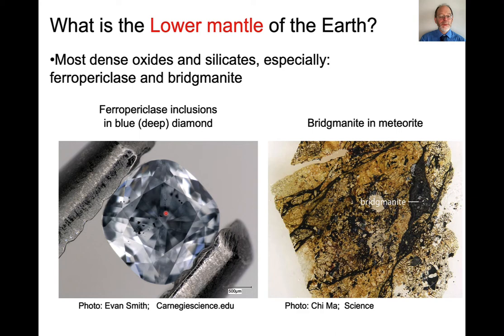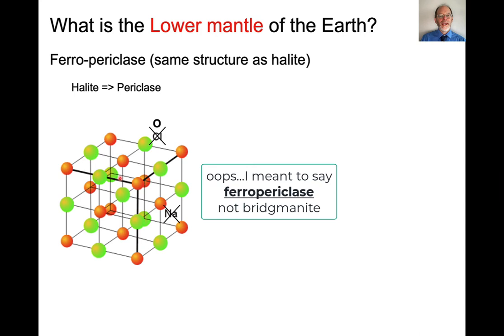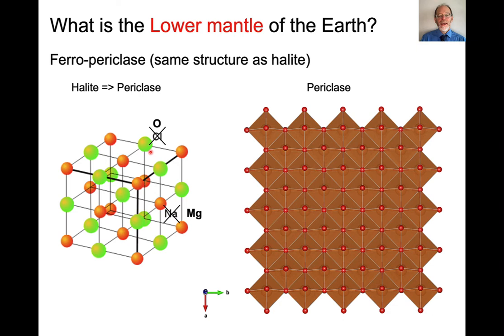We do see ferropericlase inclusions in blue diamonds. Blue diamonds are thought to be our deepest samplers of materials from the interior of the earth. Bridgmanite also occurs in meteorites, so this little tiny grain over here is bridgmanite. The structure of ferropericlase turns out to be the same as halite.